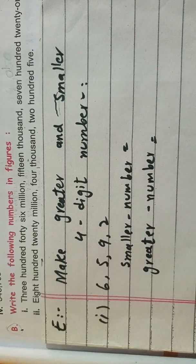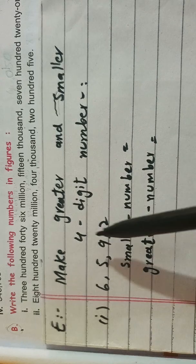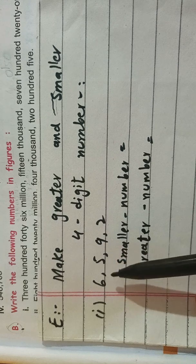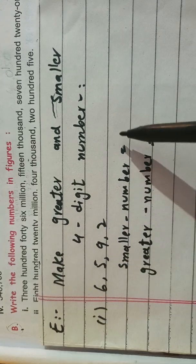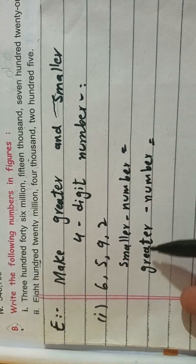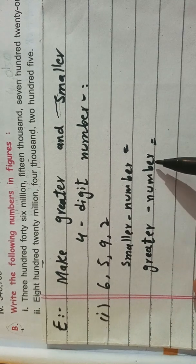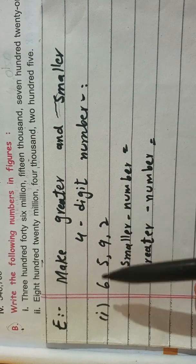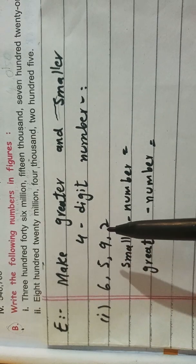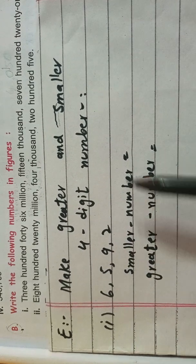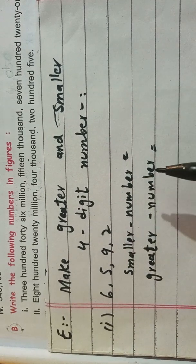For the smaller number, we use ascending order — arranging digits from smallest to largest. For the greater number, we use descending order — arranging digits from largest to smallest.